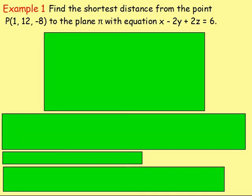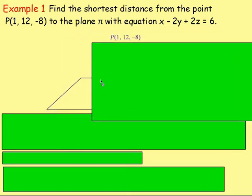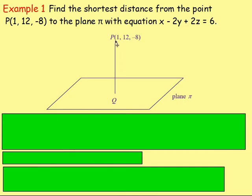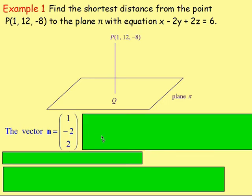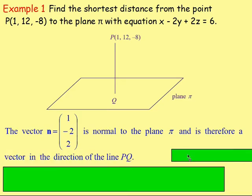Let's look at example one. Find the shortest distance from the point P with coordinates (1, 12, -8) to plane pi with equation x - 2y + 2z = 6. We have a point P and a plane pi, and we want to work out the shortest distance. The first thing we can work out — we have the equation of the plane: 1x - 2y + 2z = 6. The coefficients of x, y, and z — so 1, -2, and 2 — come from the vector that's normal to the plane. So the normal vector n will have the components (1, -2, 2), just from the coefficients of x, y, and z. That will be the vector normal to plane pi, and therefore a vector that is parallel in the direction of PQ.